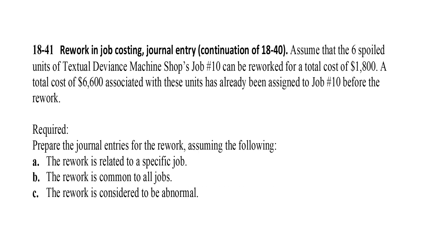Exercise 18-41: Assuming there are six spoiled units for job 10, they can be reworked at a total cost of $1,800. Required: prepare journal entries for the rework assuming the rework is related to a specific job, common to all jobs, or considered abnormal.